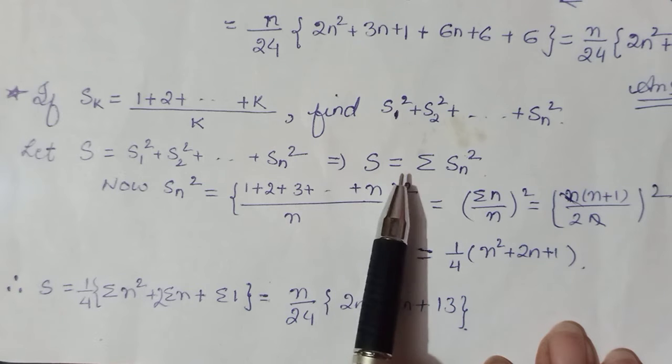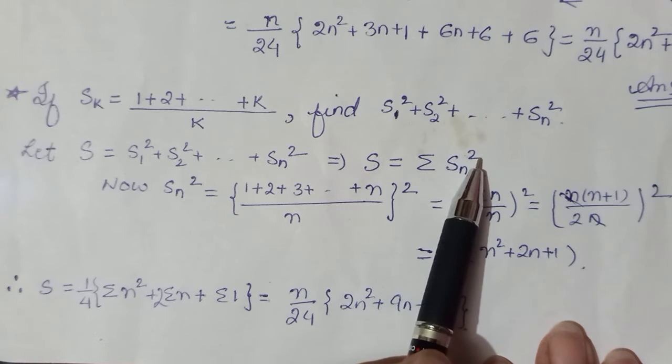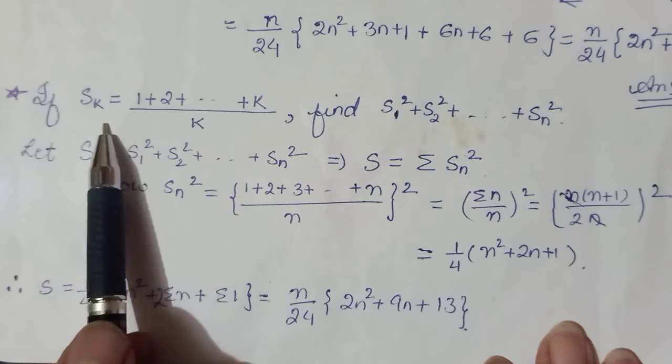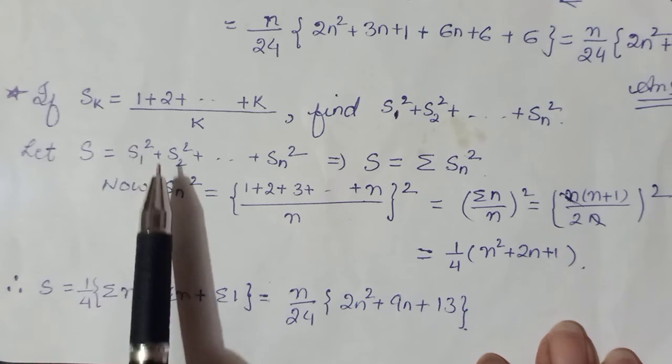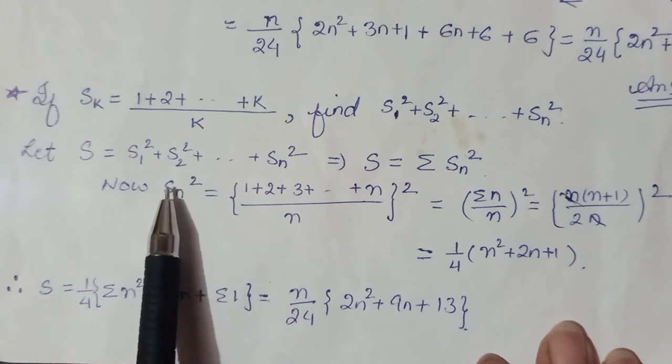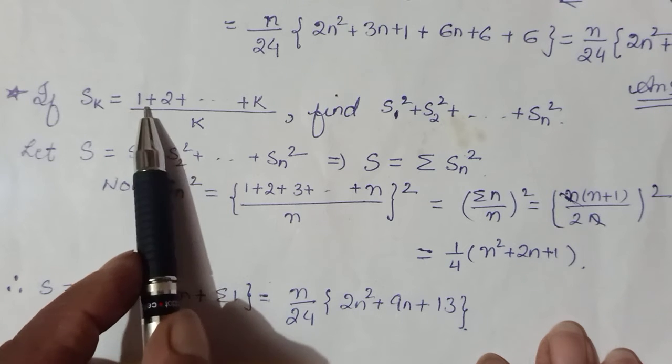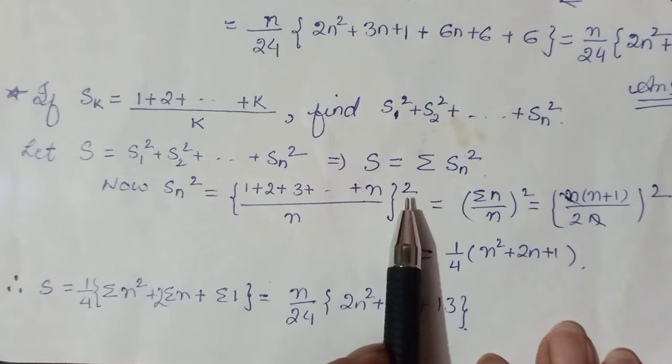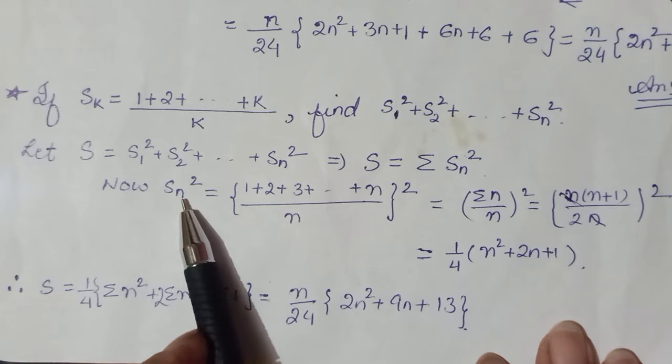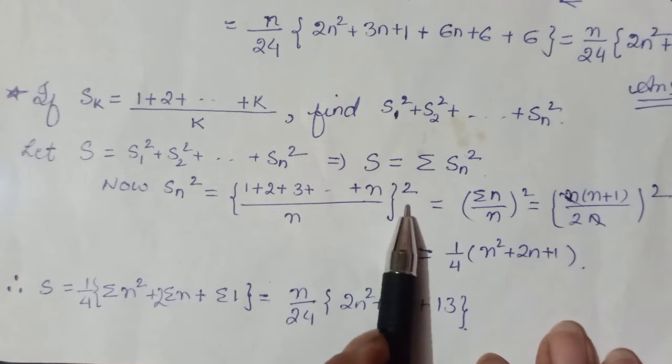So for this sequence, nth term is Sn². So this whole sequence, if you represent the sum by S, will be Σ of Sn². Sk is already defined, toh aap Sn nikal sakti ho yahaan se. You can replace your k by n. So your Sn will be (1 + 2 + ... + n)/n, and uska square karna hai aapne. It's not Sn alone, Sn is square, so yeh Sn ho gaya.